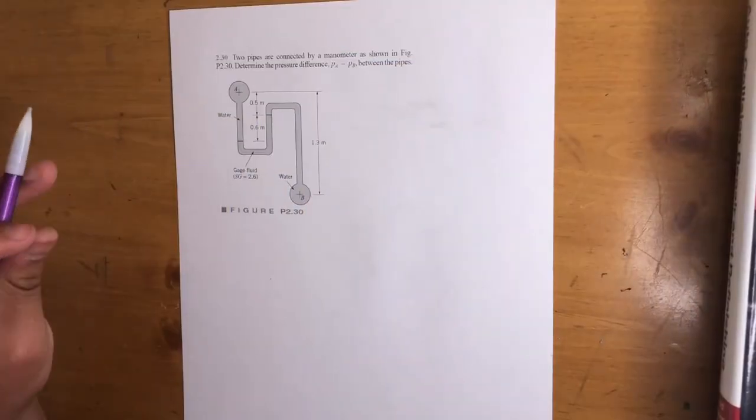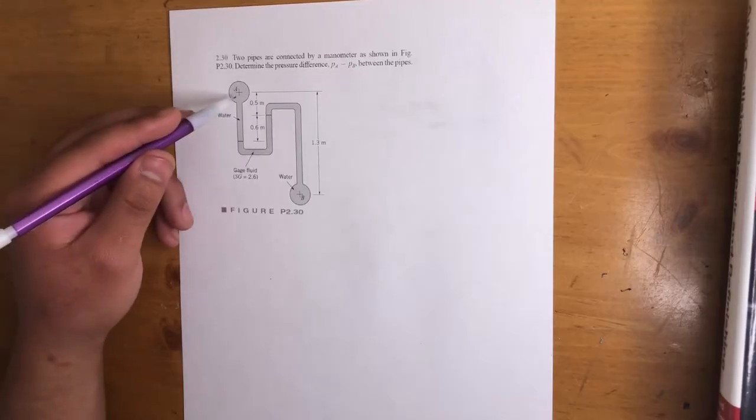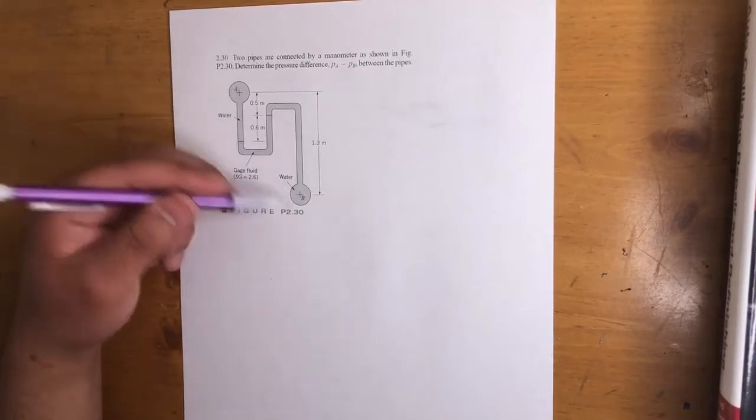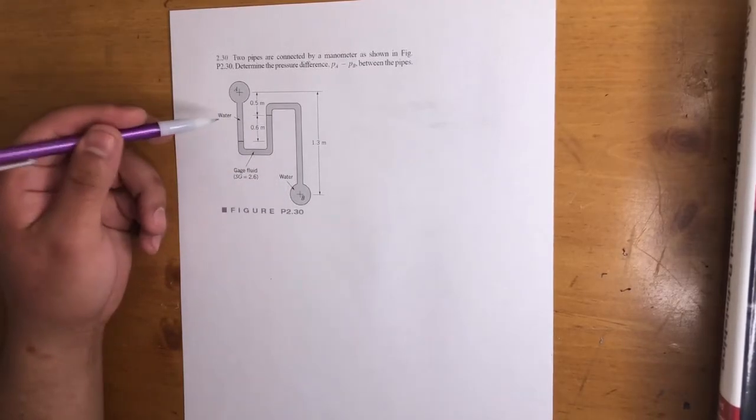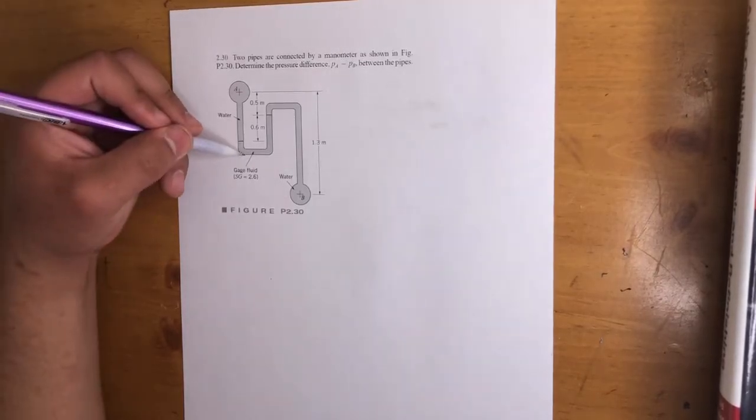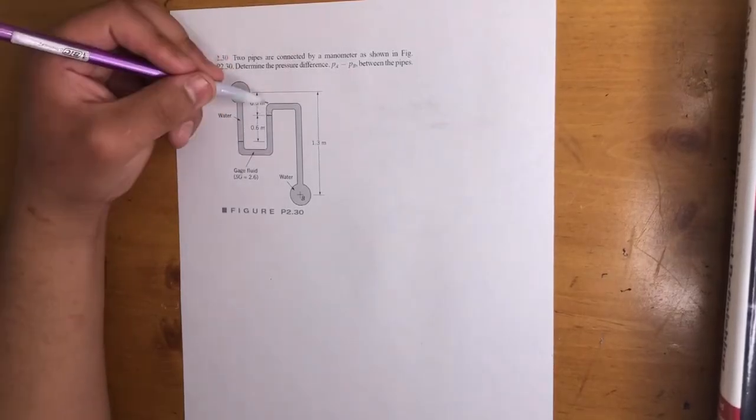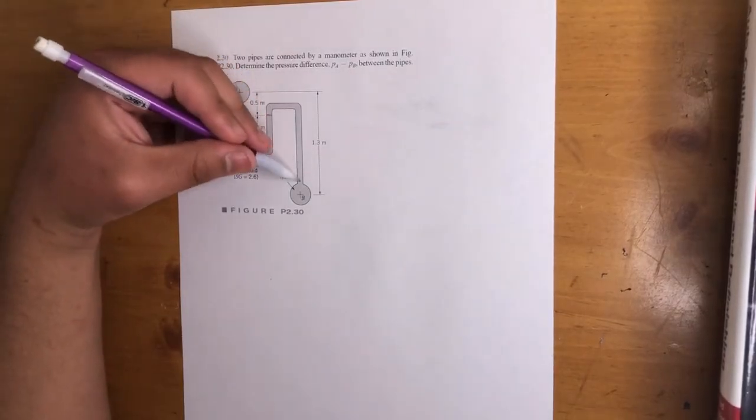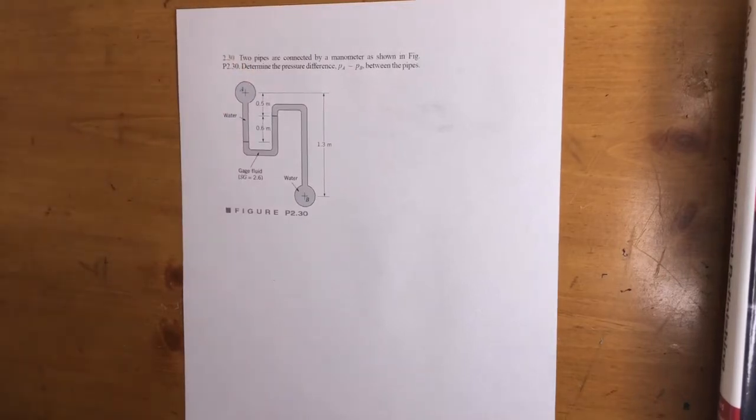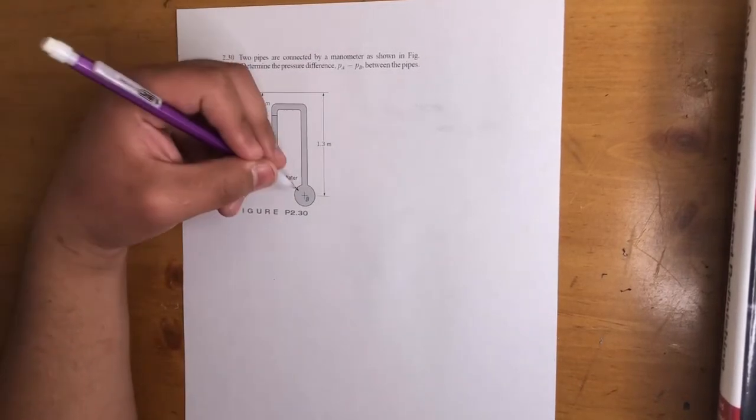So we start at point A and we want to get the pressure difference between these two points. There's water in this column, there's a fluid in this one up until that line and then water again. So we want to determine what the pressure difference is between this point and this point.